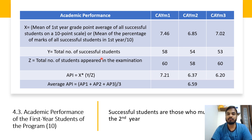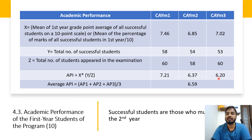Total successful students are 58 and total students appeared in the examination is 60. The Academic Performance Index (API) is calculated using the formula: API = X × (Y / Z), where X is the mean CGPA of successful students, Y is the number of successful students, and Z is the total appeared. This gives API for CAY M1 as 7.21, CAY M2 as 6.37, and CAY M3 as 6.20. The average API is (7.21 + 6.37 + 6.20) / 3 = 6.59.